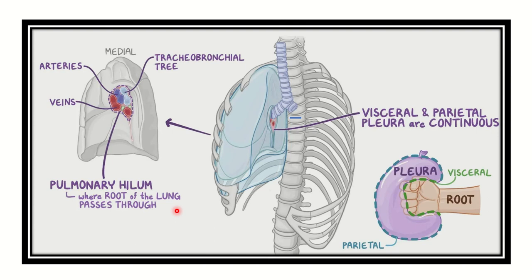Here we can see the medial surface of the lungs and the hilum. In this picture, the left-sided lung has been removed and the right-sided lung is present. We can see the right bronchus here, and the left bronchus here — the left bronchus is cut, and we can see at this level where the left bronchus is located.